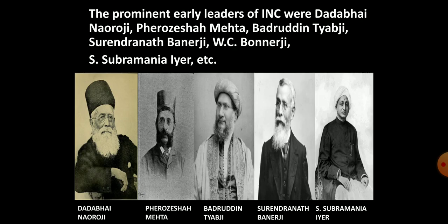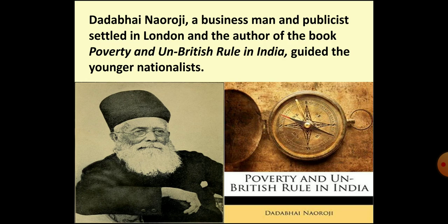Some of the prominent early leaders of the Indian National Congress, such as Dadabhai Naoroji, Firoz Shah Mehta, Badruddin Tayyabji, W.C. Bonnerji, Surendranath Banerji, and S. Subramanya Iyer, were from Bombay and Calcutta. Dadabhai Naoroji, also known as the Grand Old Man of India, was a businessman and publicist in London and a guiding figure for younger nationalists. He wrote a book named Poverty and Un-British Rule in India in 1901, in which he described the economic consequences of British rule in India.